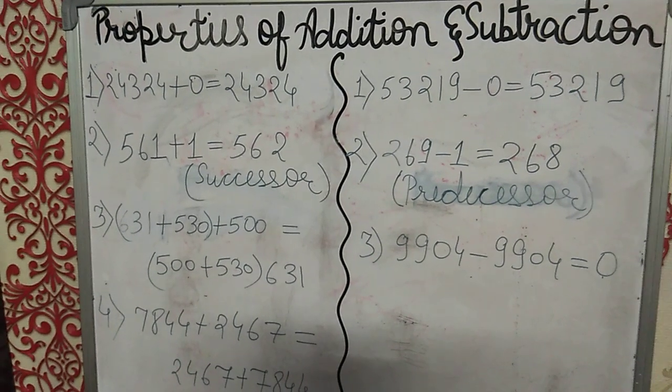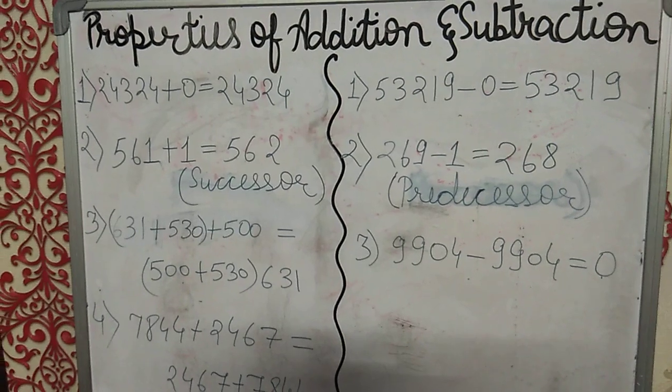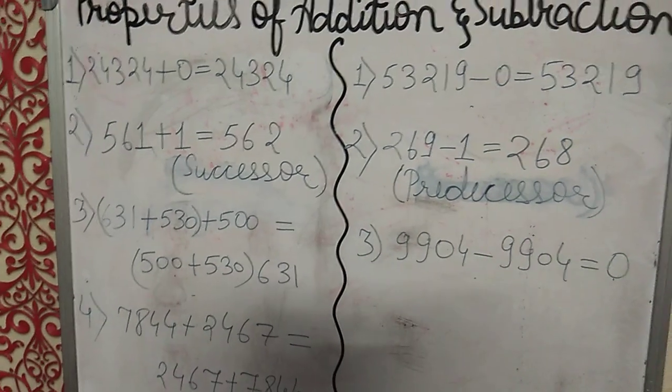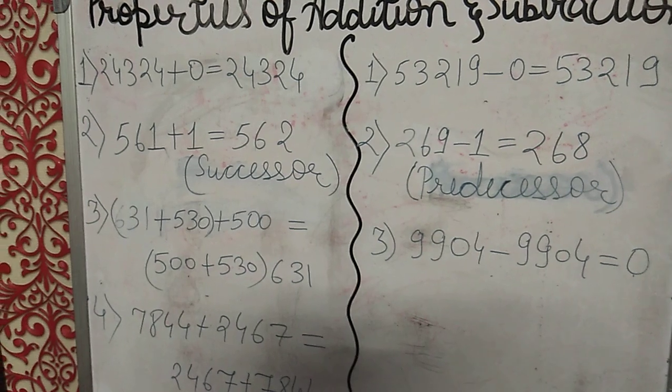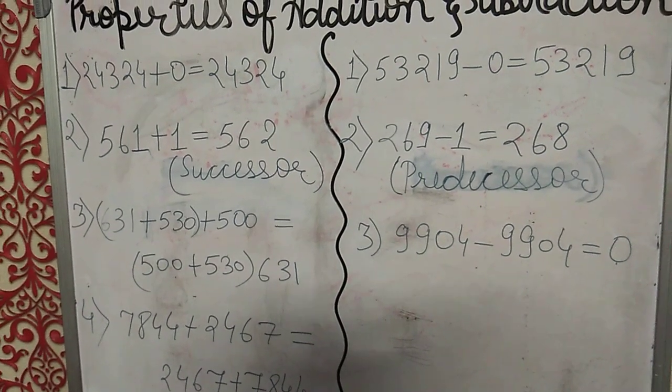If we add 0 to any number, then we will get the sum as the number itself. Like 24,324 plus 0 is equal to the same number, the number itself, 24,324.